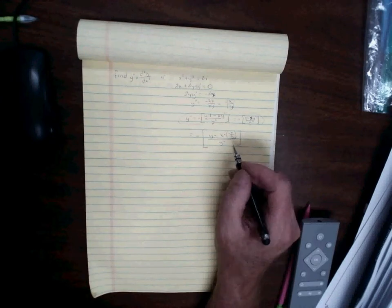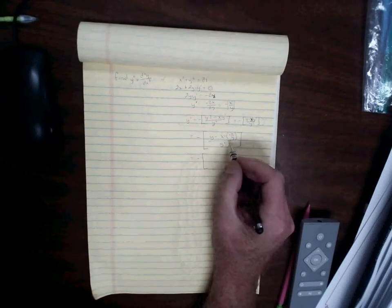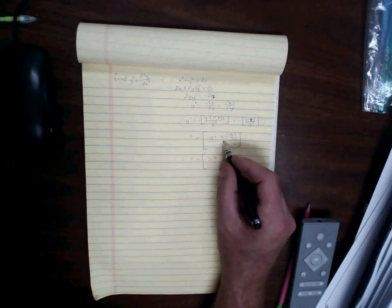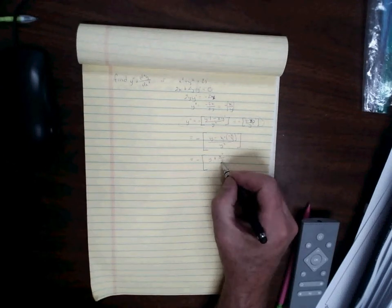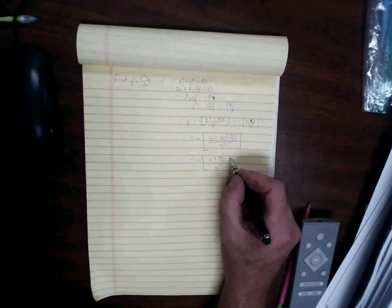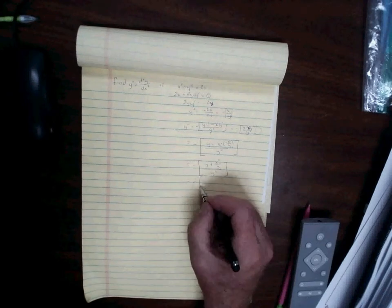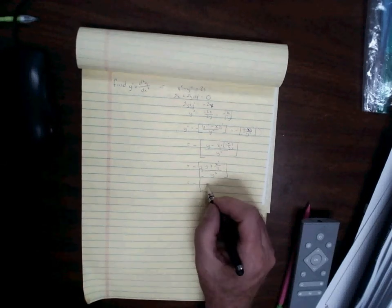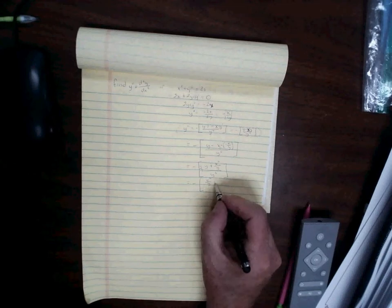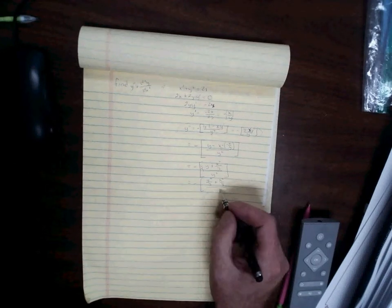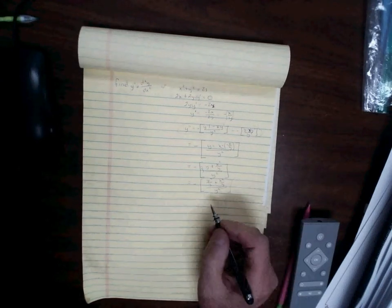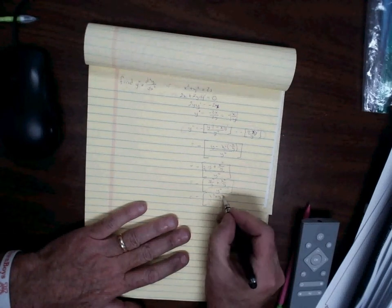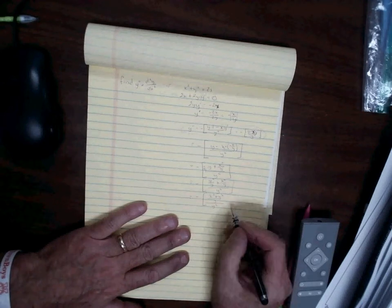For multiple choice the answer will often be in a cleaned-up form, so I'll show you how to simplify. We have negative on the outside, then y minus negative x times x over y — negative times negative makes positive — giving x squared over y. To combine y minus x squared over y, multiply y by y over y to get y squared over y, giving negative times (y squared over y plus x squared over y), all over y squared. This simplifies to negative (x squared plus y squared) over y, divided by y squared.